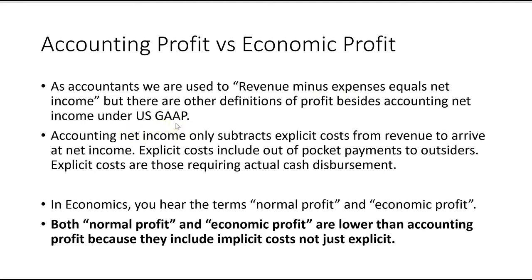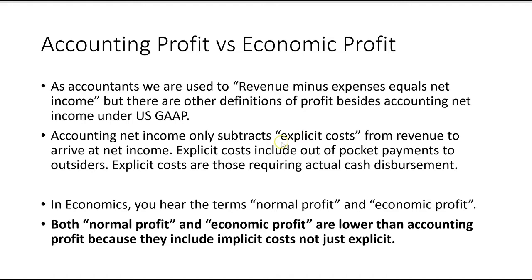Accounting net income only subtracts what we call explicit costs from revenue to arrive at net income. Explicit costs include out-of-pocket payments to outsiders — those requiring actual cash disbursement. In accounting, to get net income we subtract these explicit costs from revenue.